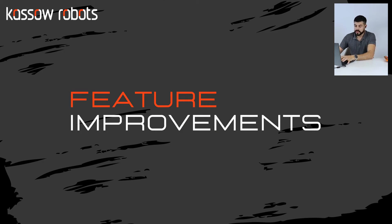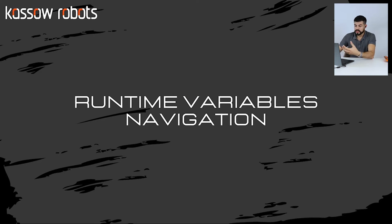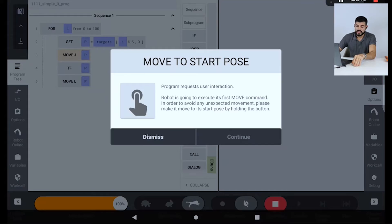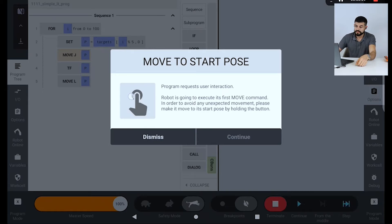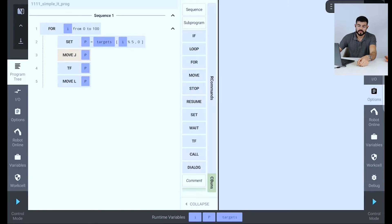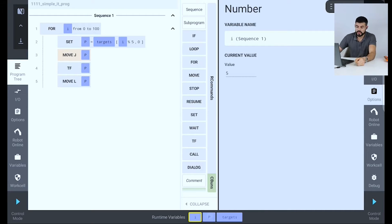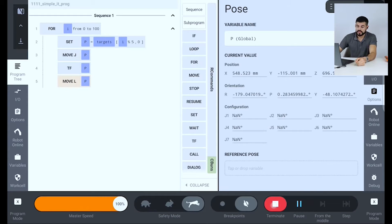We also have some improvements since our last release. One of these improvements is runtime variables navigation, which makes the debugging process easier. You can quickly access your variables, check if your program is working well, and it filters to show only the variables used in your program. You can easily look through your list, check variable values, and during runtime verify that values are properly defined. You can access these values from the bottom bar and also filter which variables to display there.